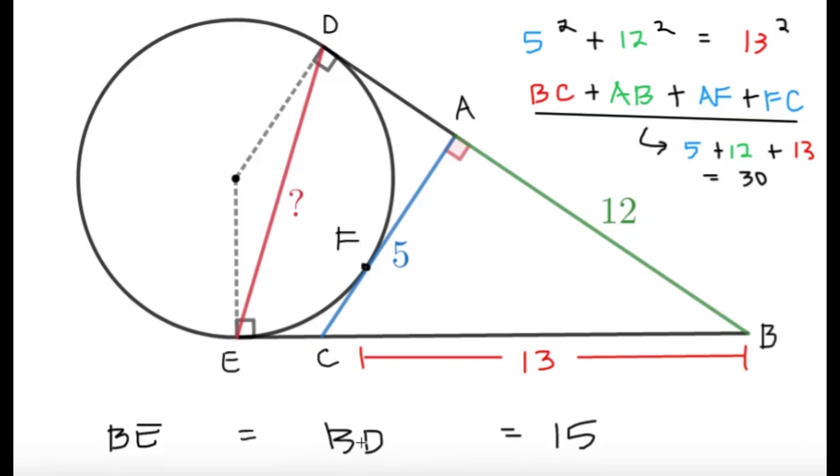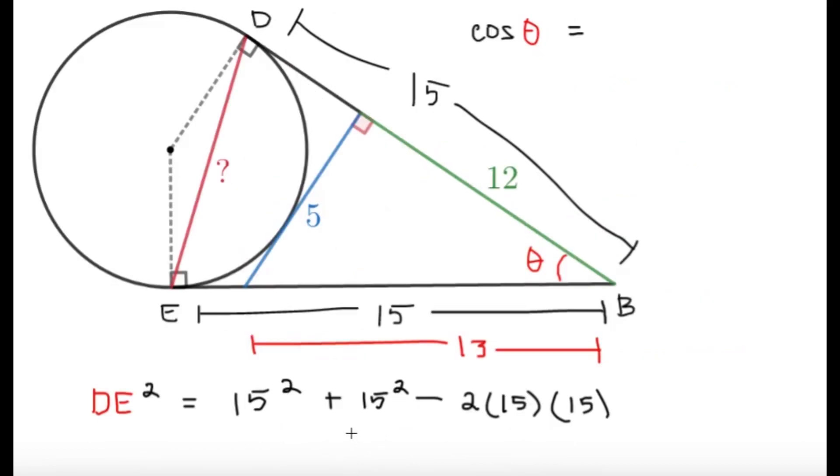All right, with this information, we can kind of expect that we will be using the cosine law to help us get what the length of DE is, because we already have DB and EB. All we have to do is just find the cosine of the angle here, and we can just get the value of DE squared and just take the square root of that from the cosine law.